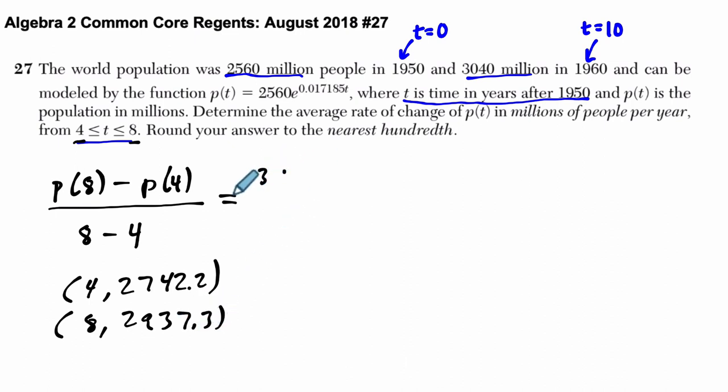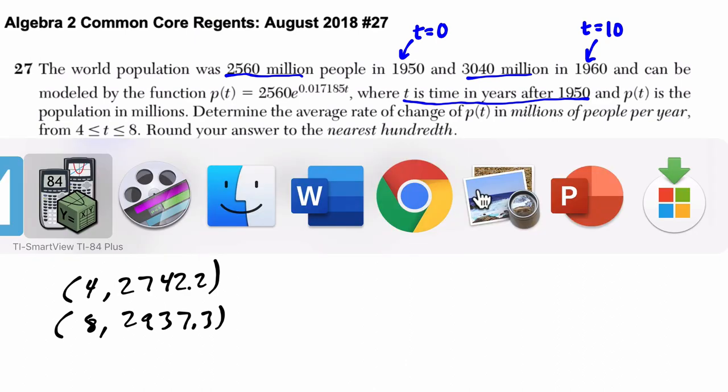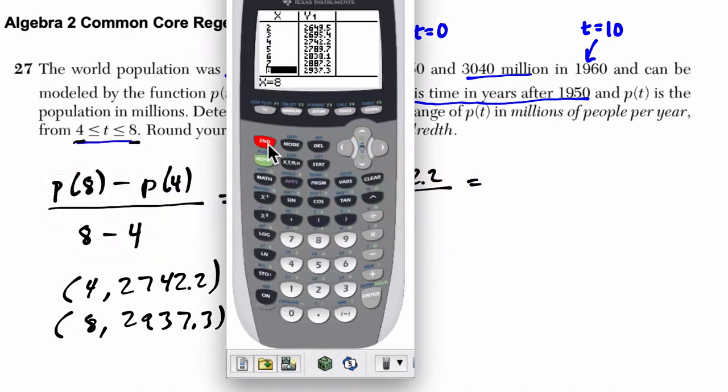So we're finding the difference of the output, so 2937.3, that's p of 8, the output of 8, minus 2742.2 over 4. And on the calculator, let's enter this, make sure we have an agreement here.